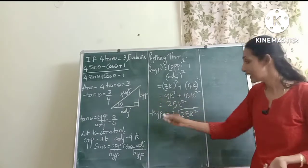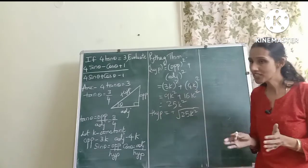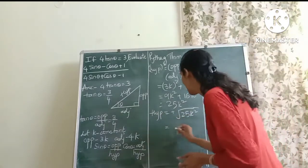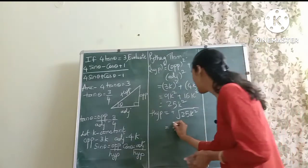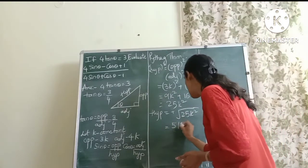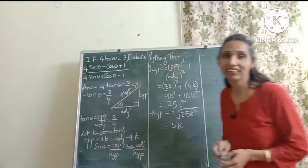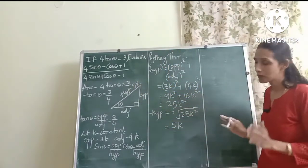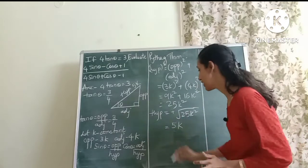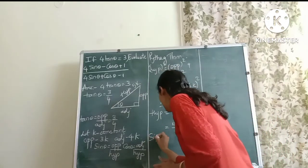That's why the hypotenuse is the positive square root of 25k². Quickly tell me, what will be square root of 25? 5. And square root of k² will be k. That means my hypotenuse value is 5k. So that's a big problem solved. I know my hypotenuse value.